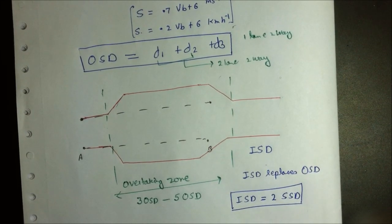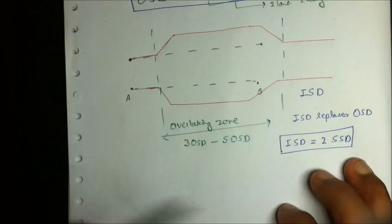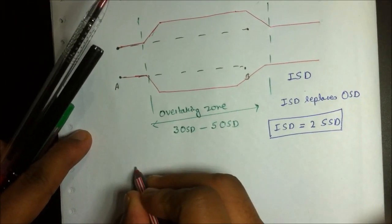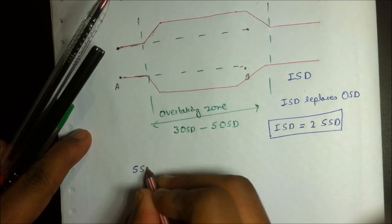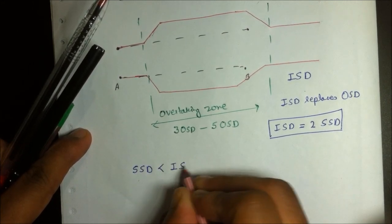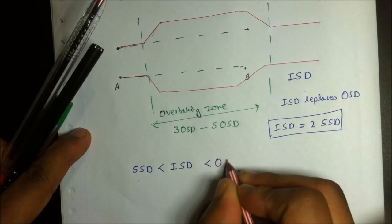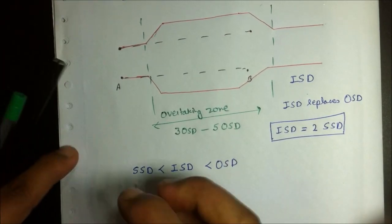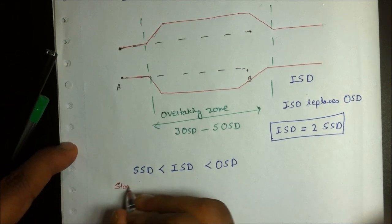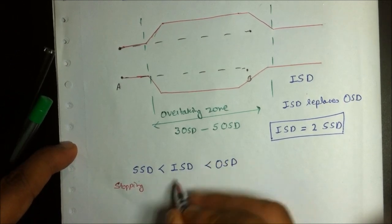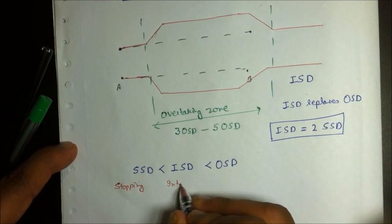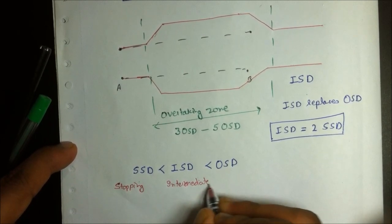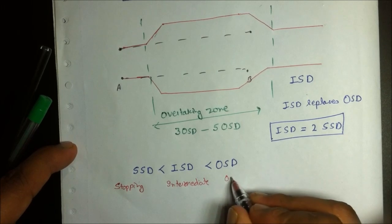Arranging the sight distances in ascending order: SSD (stopping sight distance) is less than ISD (intermediate sight distance), which is less than OSD (overtaking sight distance).